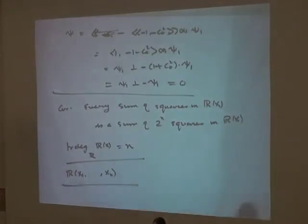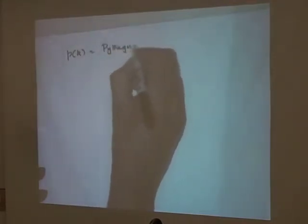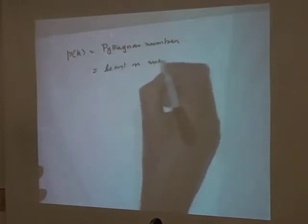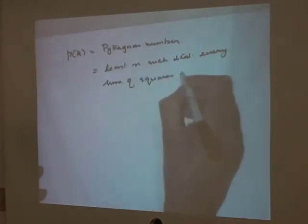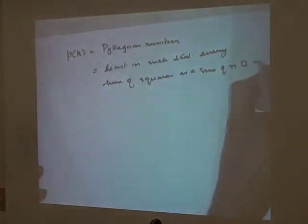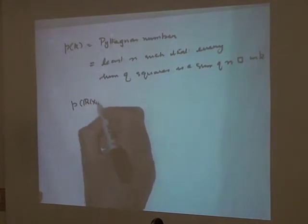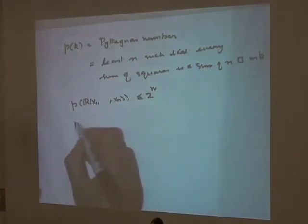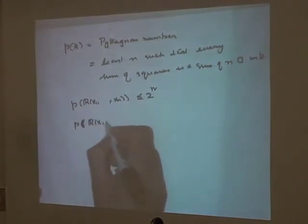This leads to an invariant called the Pythagoras number of a field, denoted p(K). The Pythagoras number p(K) is defined as the least n such that every sum of squares is a sum of n squares in K. What we have just seen is that p(R(x1, ..., xn)) is bounded by 2^n. It is a much harder question to ask for the precise value of these numbers.